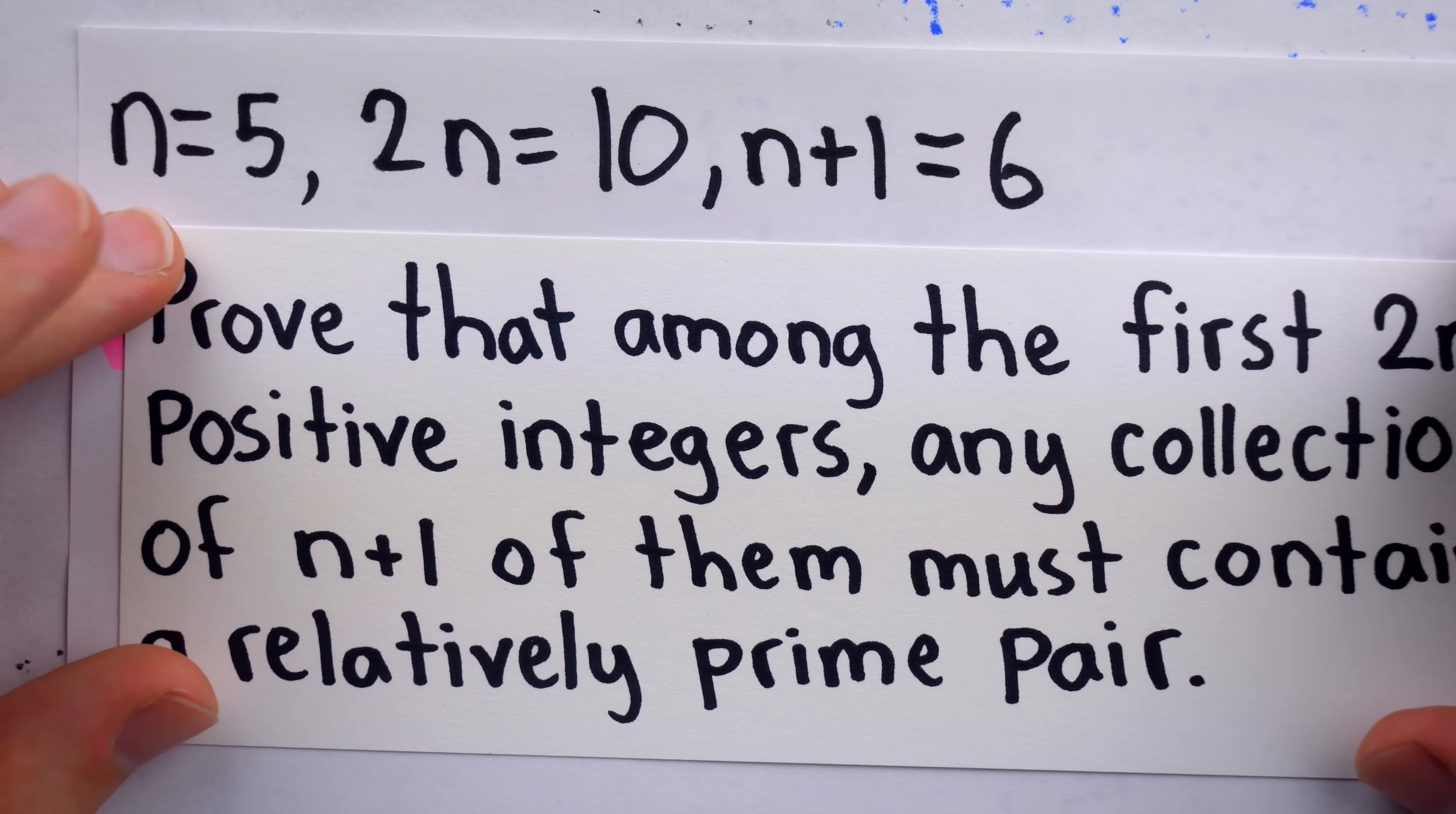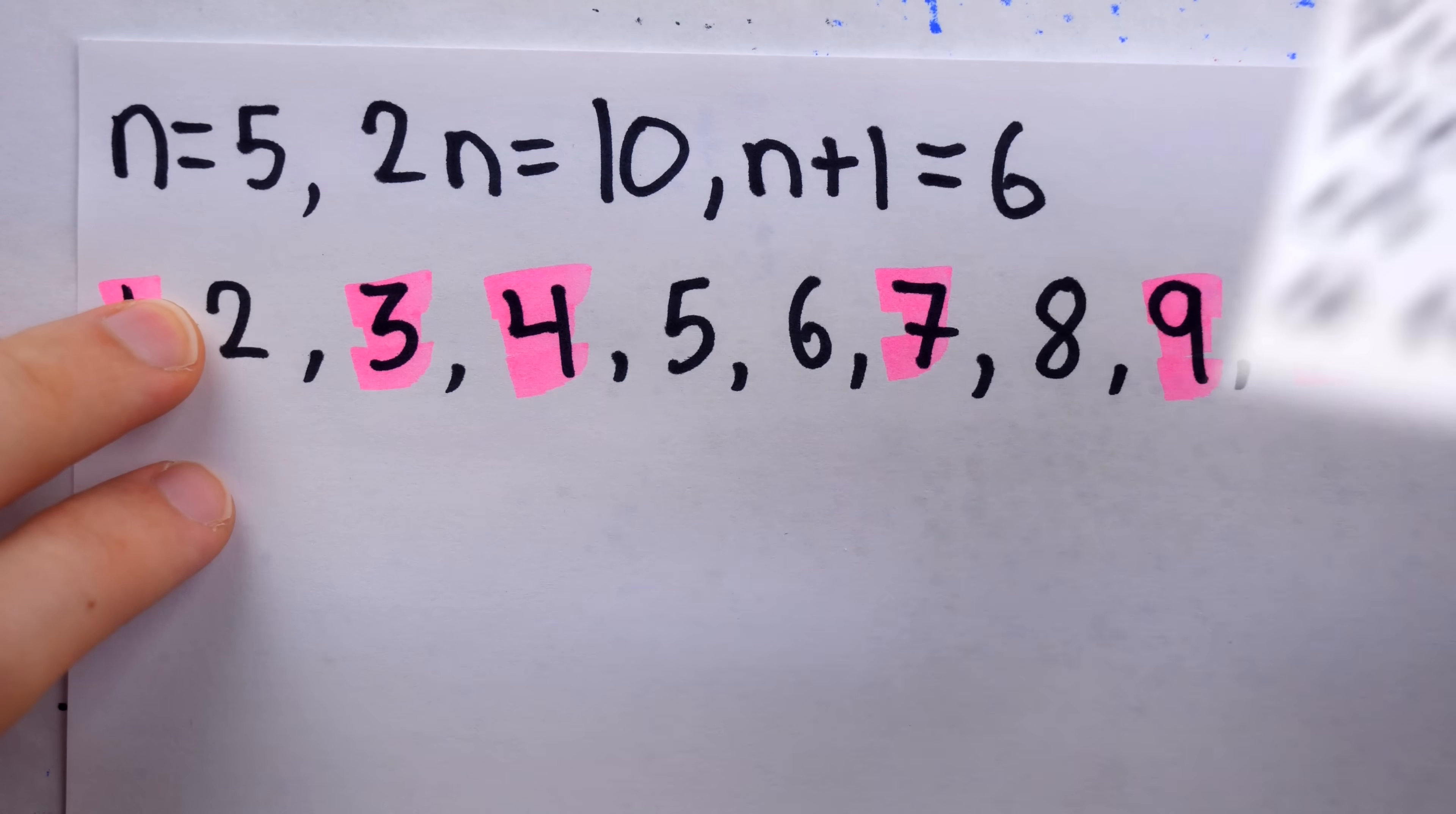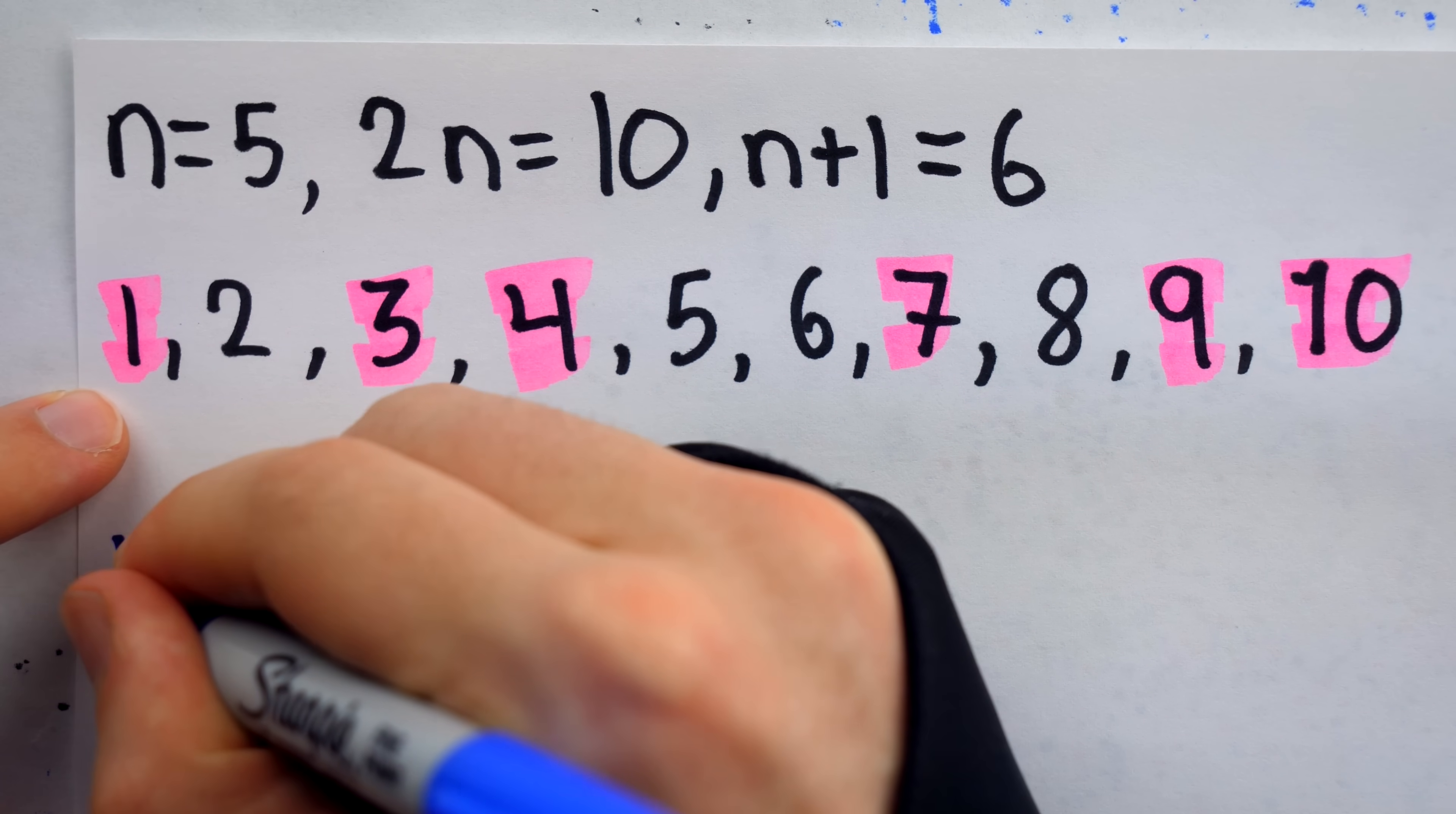And again, it is true that, in general, among the first 2n positive integers, any collection of n+1 of them, think one more than half of the total, must contain a relatively prime pair. Now, in this example, we had a bunch of relatively prime pairs. But indeed, it is the case that n+1 is important. If we were only required to select n integers, then it wouldn't follow that a pair of them must be relatively prime.